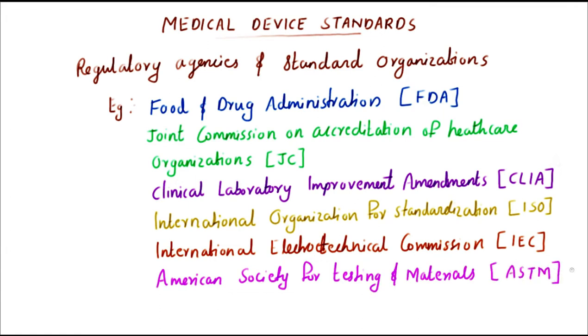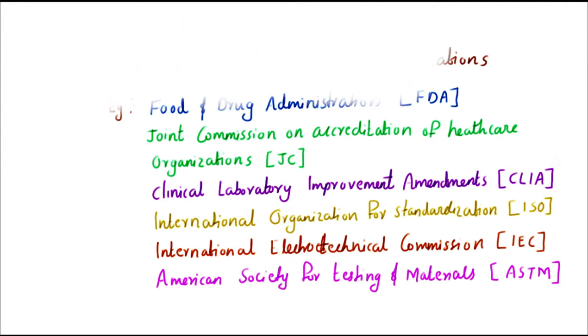These are not limited to this — there are a lot of other agencies and organizations also available. When you develop a medical device, the type of device determines the agency and standards to choose, so you probably need to do some research to determine which regulatory agency is responsible for your type of device. For example, knowledge and conformance to standards recognized by FDA is the key if your device is to be approved for sales in the USA.